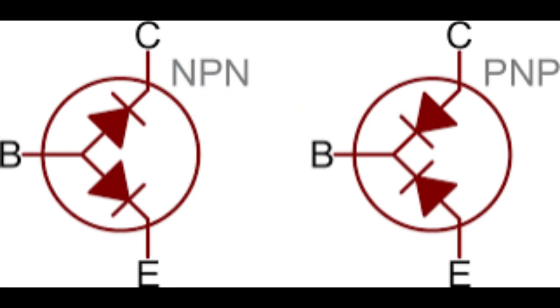As you can see in the diagram, BJTs consist of three differently doped semiconductor regions: the emitter region, the base region, and the collector region. These regions are respectively P-type, N-type, P-type in a PNP, and N-type, P-type, N-type in an NPN.